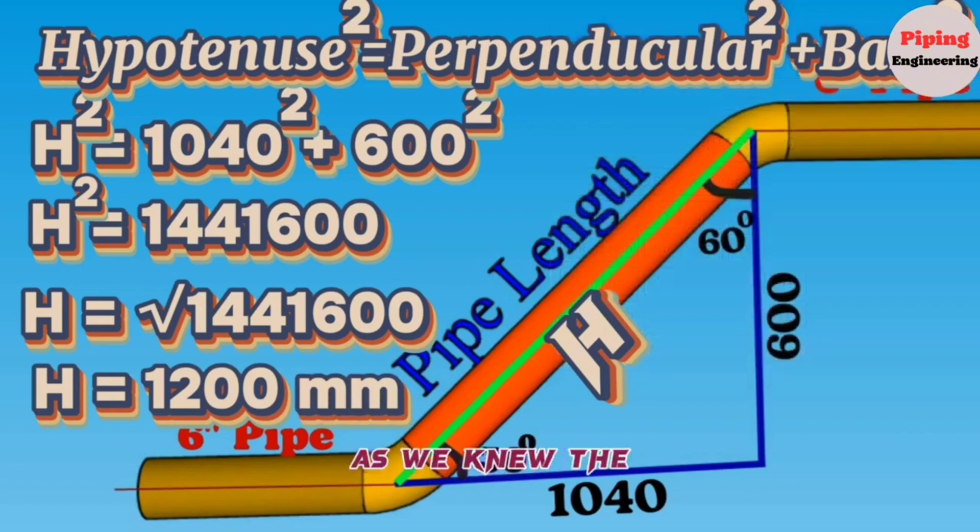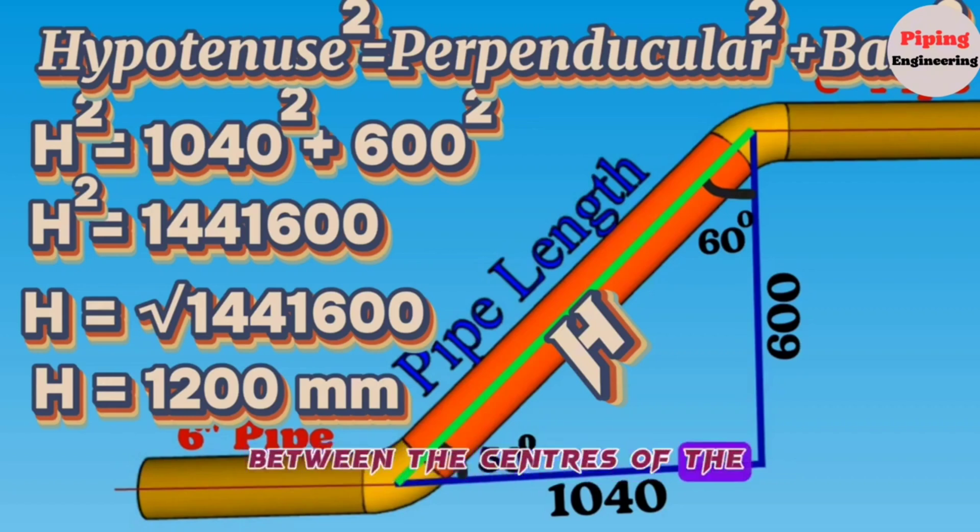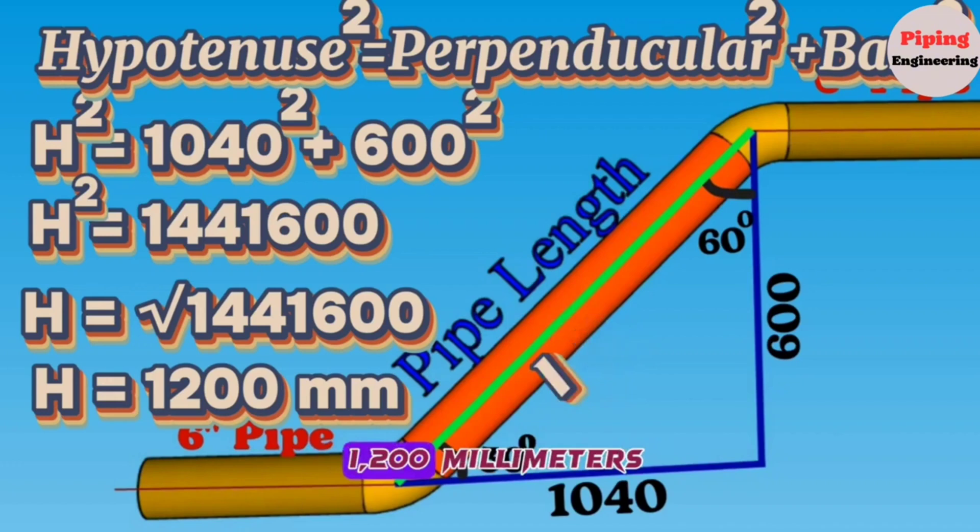As we know, the length of the H hypotenuse is also the distance between the centers of the butt-weld elbows. So, the overall length between the centers of the butt-weld elbows is 1200 millimeters.